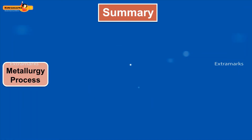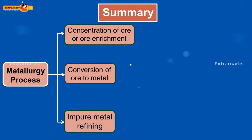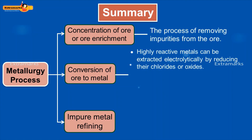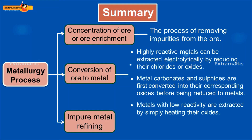Let's recall what we have learnt about metallurgy. The metallurgy process consists of three major steps: one, ore concentration or enrichment; two, ore conversion to metal; and three, impure metal refining. The concentration of the ore refers to the process of removing impurities from the ore. Highly reactive metals can be extracted electrolytically by reducing their chlorides or oxides. Metal carbonates and sulphides are first converted into their corresponding oxides before being reduced to metals. Metals with low reactivity are extracted by simply heating their oxides. In the final step, the metals are refined.